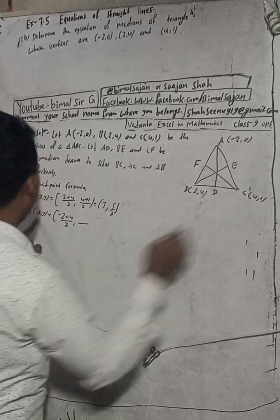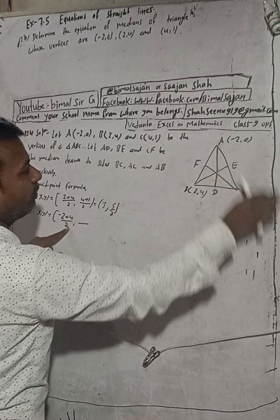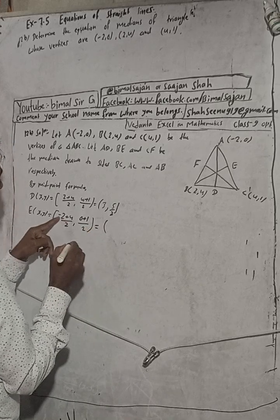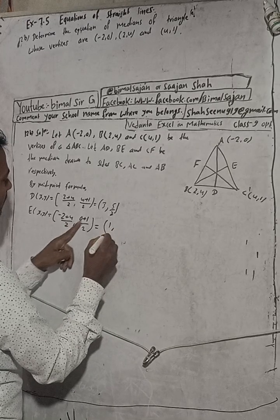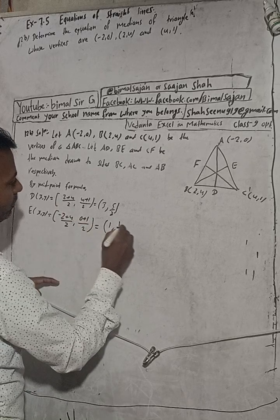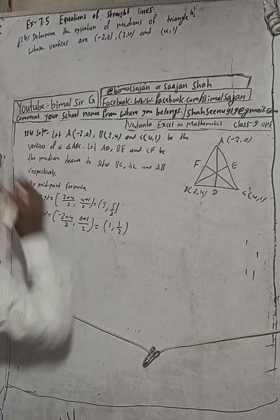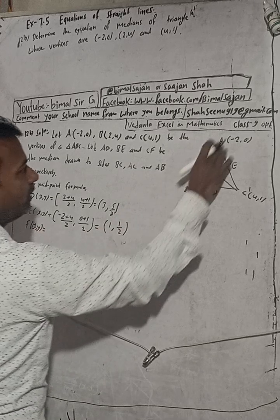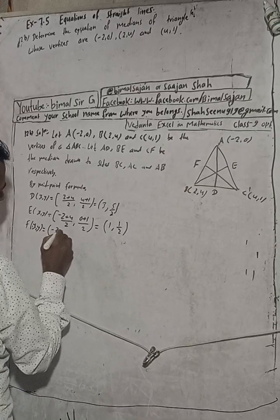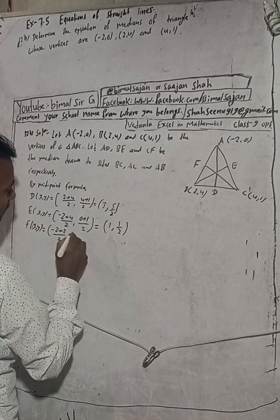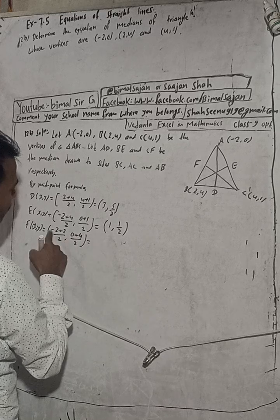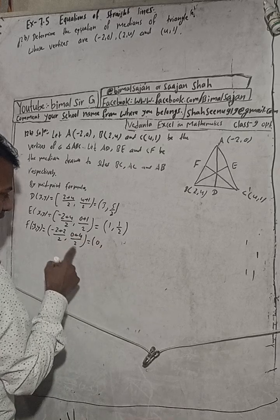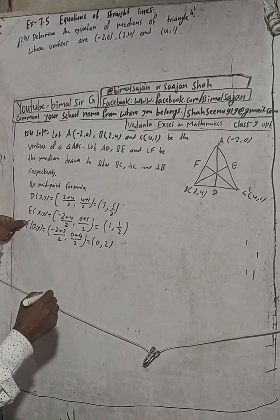Now E is the midpoint of AC. So E: x = (-2 + 4) / 2 = 2/2 = 1, y = (0 + 1) / 2 = 1/2. So E = (1, 1/2). Now F is the midpoint of AB: x = (-2 + 2) / 2 = 0/2 = 0, y = (0 + 4) / 2 = 4/2 = 2. So F = (0, 2).